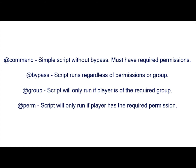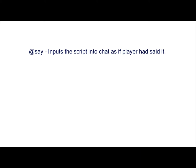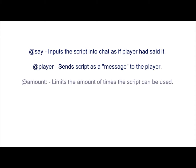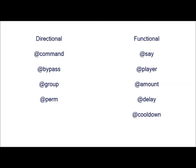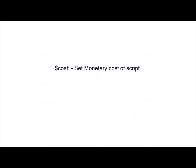These options may be followed by: AtSay, which inputs the script into chat as if the player had said it; AtPlayer, which sends the script as a message to the player; AtAmount, which limits the amount of times the script can be used; and AtDelay and AtCooldown, which add a cooldown in either seconds or minutes. Both above option groups may proceed after Cost, which sets the monetary cost of the script, and Item, which sets the item cost of the script.